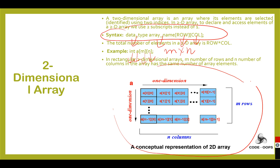This is a representation of the 2D array. Array elements are stored at indices a[0][0], a[0][1], a[0][2], and so on, up to a[0][n-1] for the first row. This continues through a[m-1][0], a[m-1][1], a[m-1][2], up to a[m-1][n-1], where m is the row size and n is the column size.